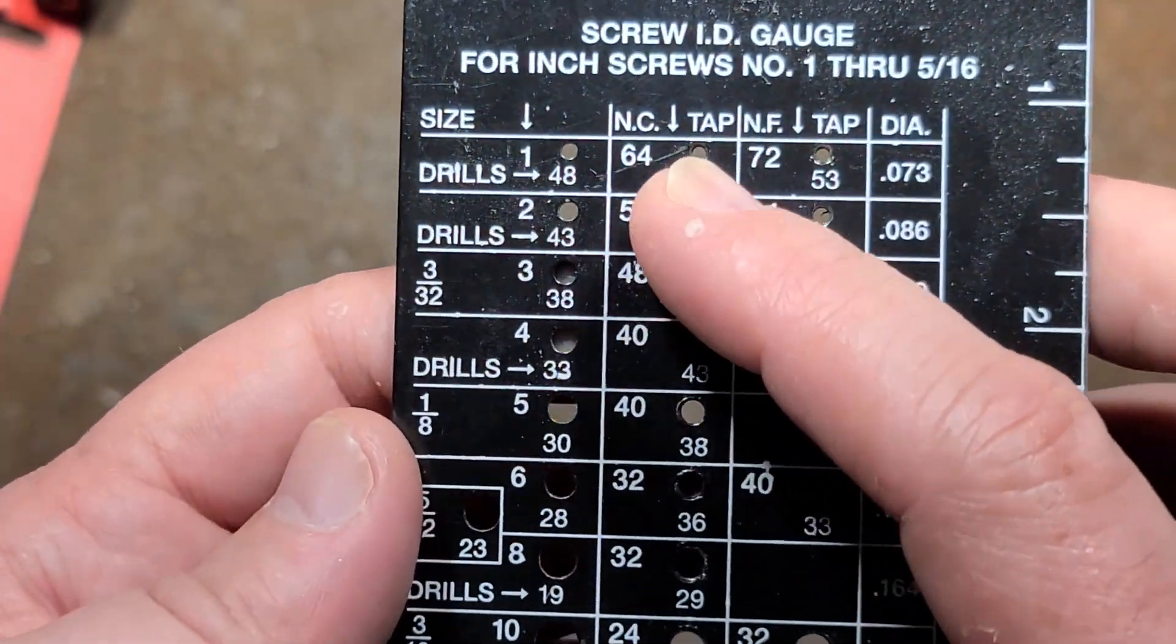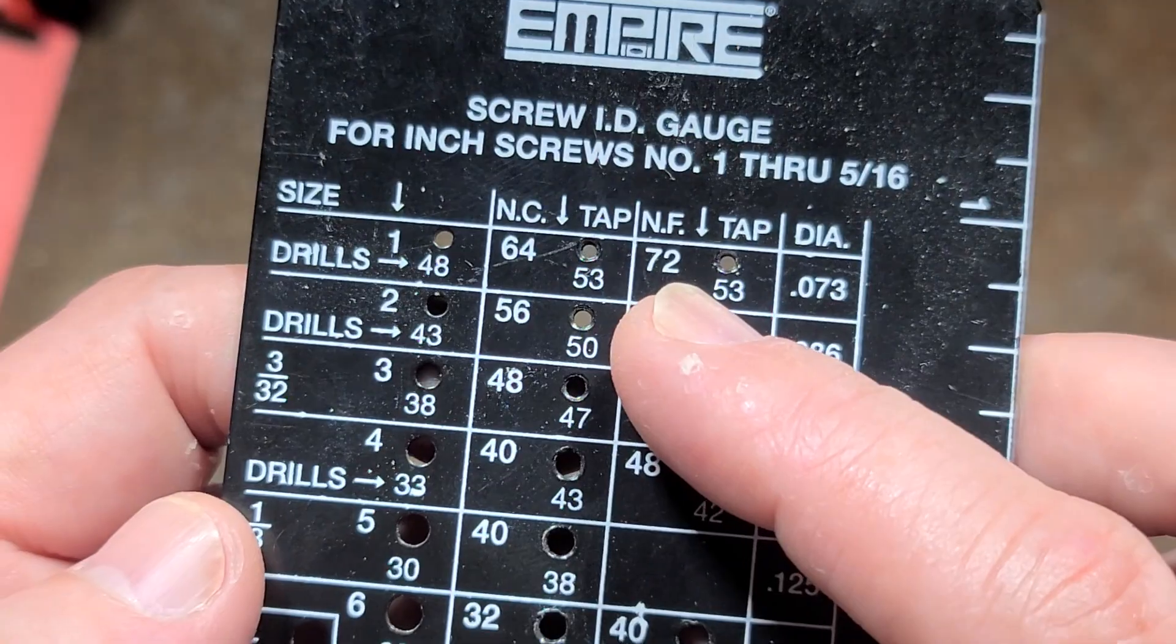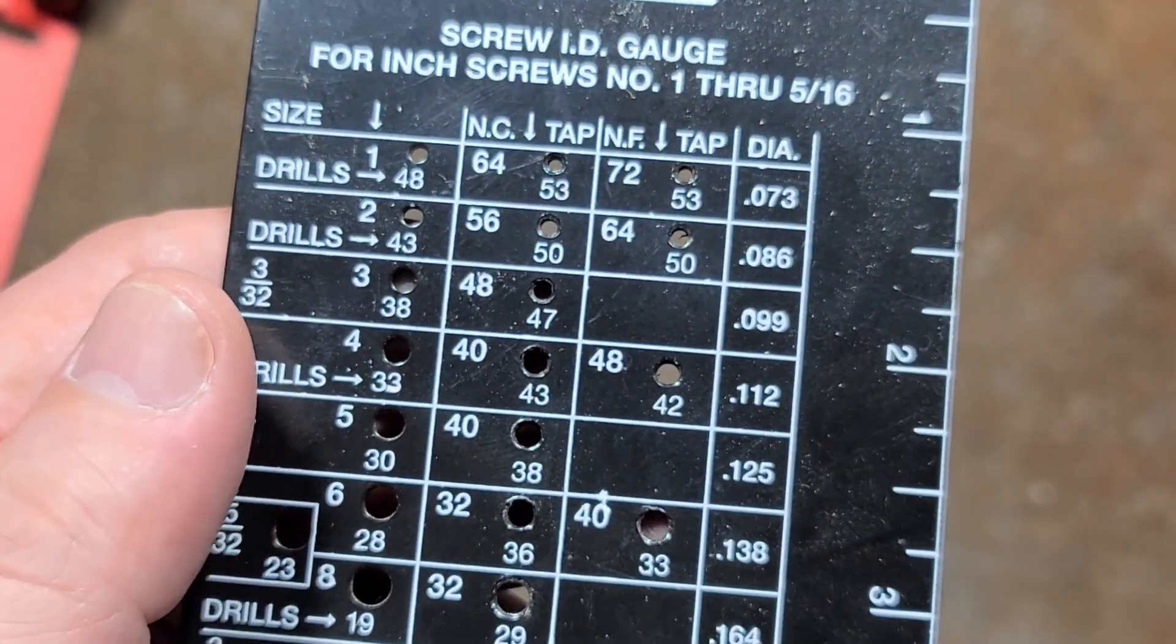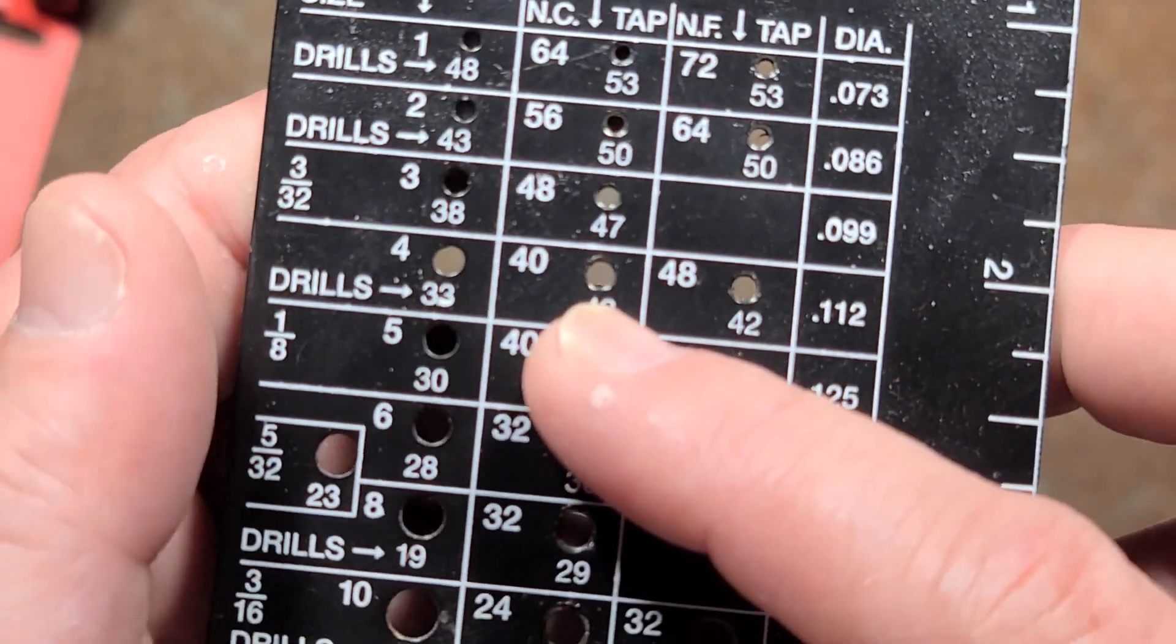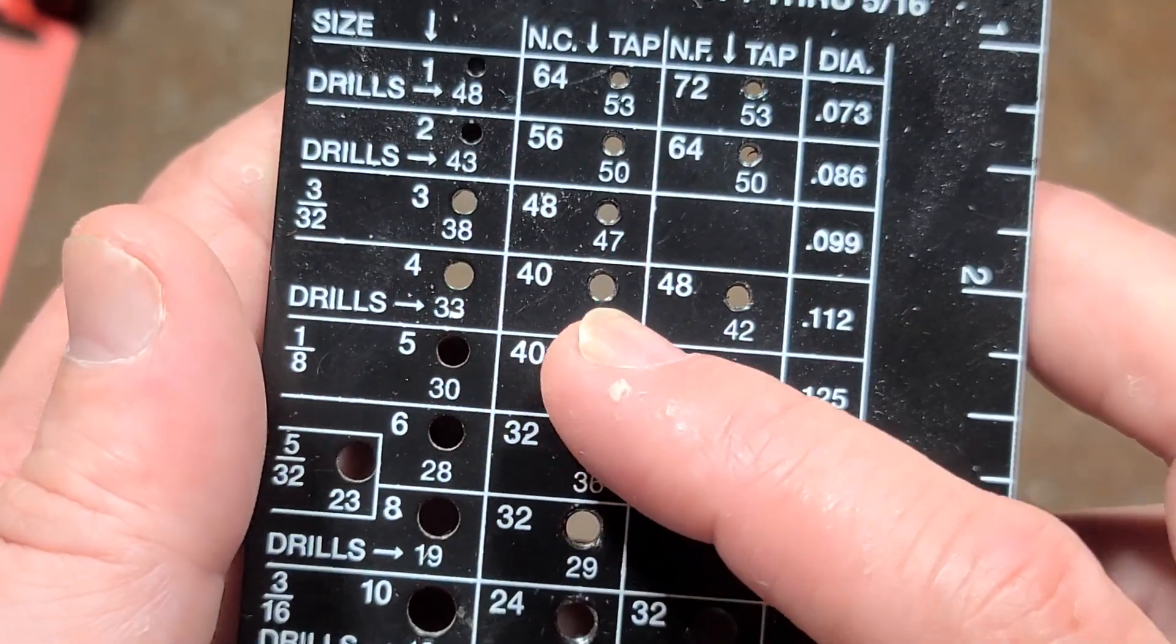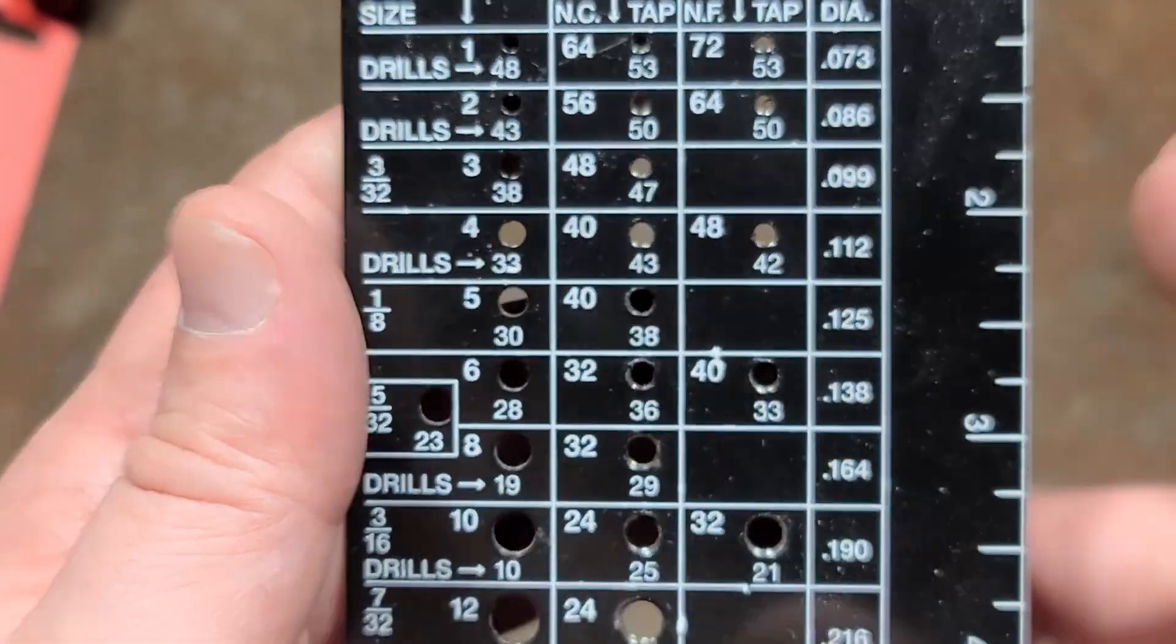So what you have is natural course thread and fine thread. You have the drill sizes for what you're going to tap with as well as the nominal hole size.